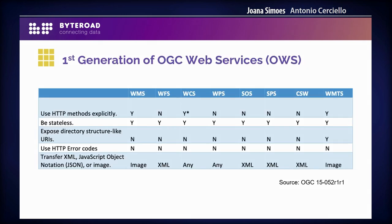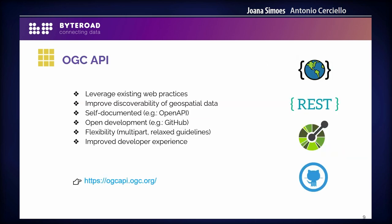If you think about the first generation of web services in OGC, you will see that they are not leveraging much of the practices that we see in the modern web today. Things like using status codes, content negotiation, or even using JSON — this was not the case in most of the OWS services. And it's okay that it was like that, because they were developed a long time ago when these things were not the common rule. But the web changed, and so did the OGC standards.